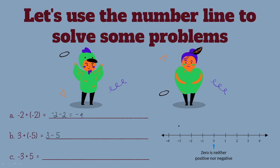So we're going to start with three, and since you subtract by moving to the left, we're going to go one, two, three, four, five. Your answer will be negative two.